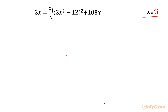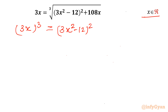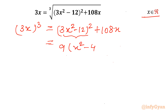Let's get started by cubing both sides. So the left hand side becomes (3x)³, and cubing the right hand side removes the cube root, giving us (3x² − 12)² + 108x. Now 3 is common in the bracket, so I will factor out 9 (as 3²), leaving x² − 4 inside the bracket. And 108x can be written as 9 times 12x.